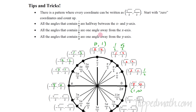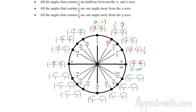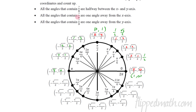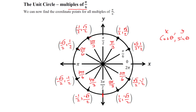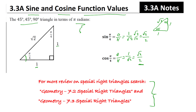Also notice: all angles with a 4 in the denominator are halfway between the axes (45°, or π/4). All angles with a 6 in the denominator are one step away from the x-axis. All angles with a 3 in the denominator are one step away from the y-axis. That's how you can remember how to fill out the unit circle, but it takes practice. Part of your homework is to fill it out. Good luck — put it all in your brain!